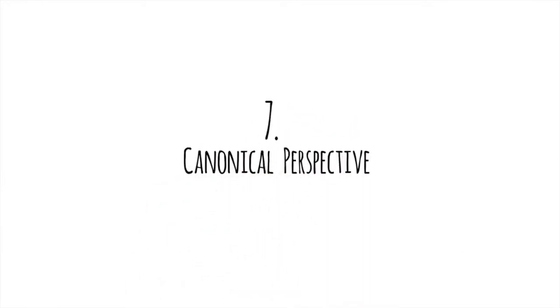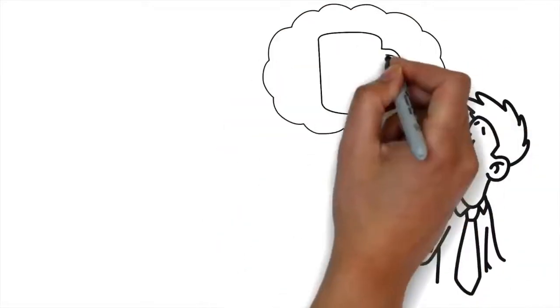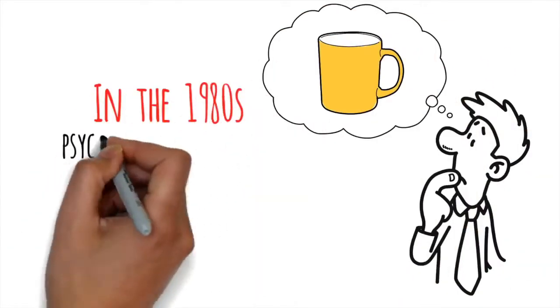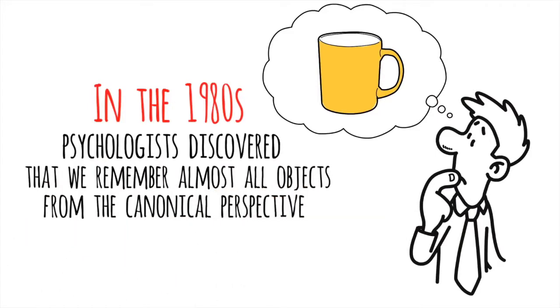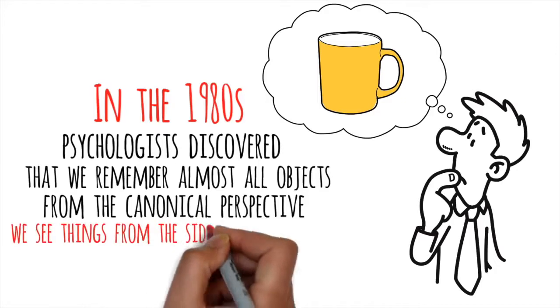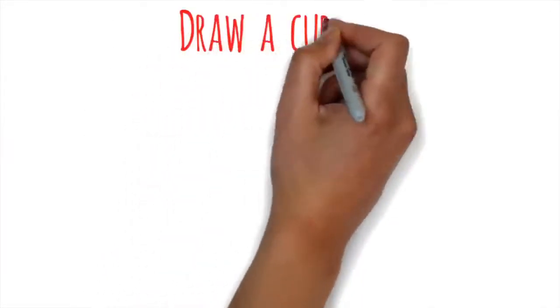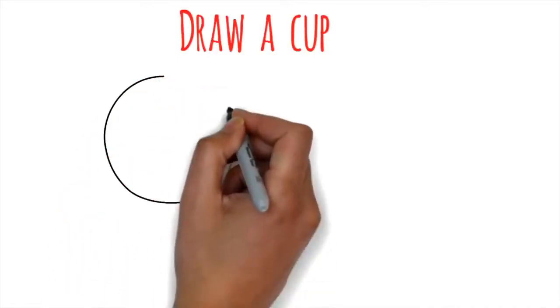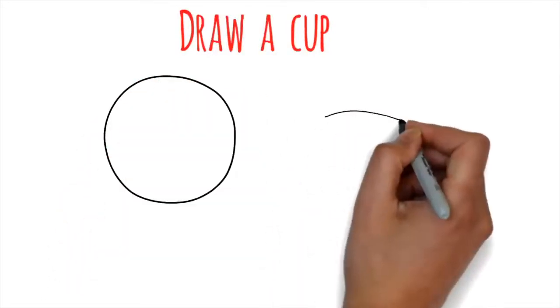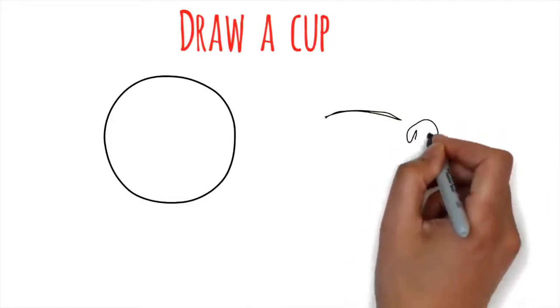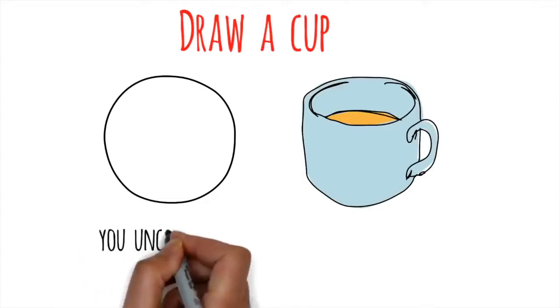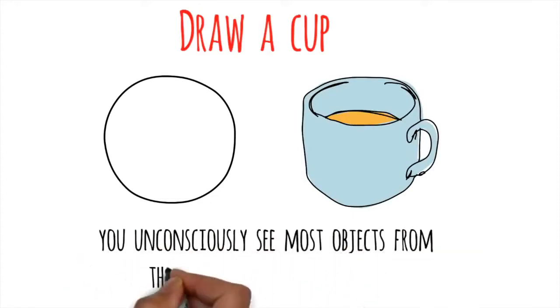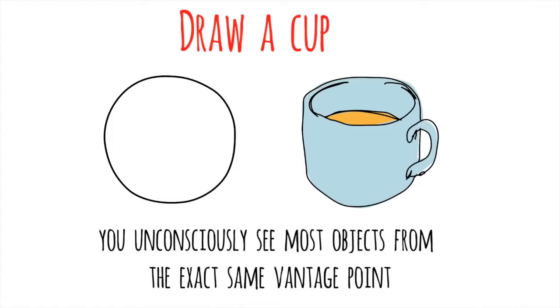Canonical Perspective. Have you ever thought about how things look in your memory? In the 1980s, psychologists discovered that we remember almost all objects from the canonical perspective. That means we see things from the side and slightly above. If you don't believe me, try it. Draw a cup. Did you draw one circle as though you were looking down on it? Or did you draw it from the side and add an angle so you could just barely see inside? Well, there are a few individual exceptions. You unconsciously see most objects from the exact same vantage point.